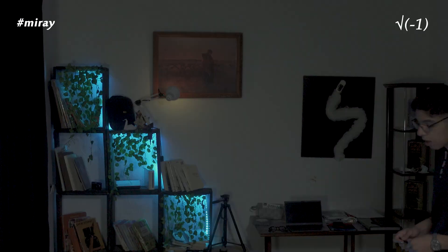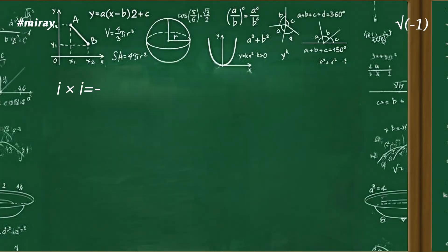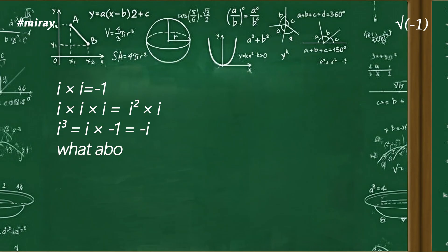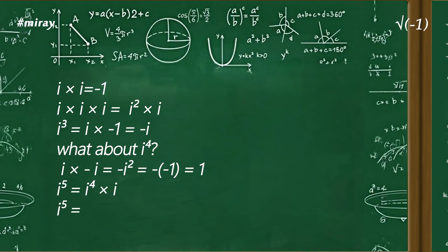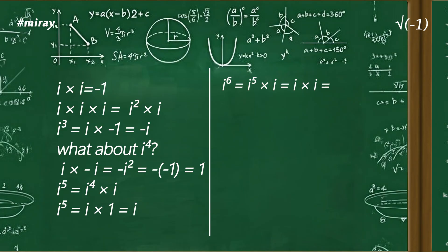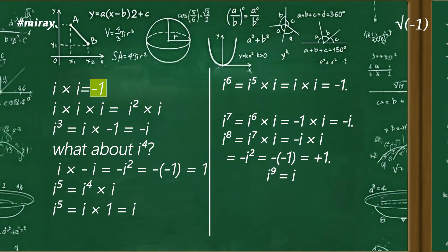What happens if we keep multiplying i by itself over and over? i × i = −1. i × i × i = i² × i = −i. What about i⁴? Since i³ = −i, then i × (−i) = −i² = −(−1) = 1. Then i⁵ = i⁴ × i = i. i⁶ = −1. i⁷ = −i. i⁸ = 1. i⁹ = i. Do you notice something? The results start repeating: −1, −i, +1, +i — and then the cycle repeats again: −1, −i, +1, +i, endlessly.